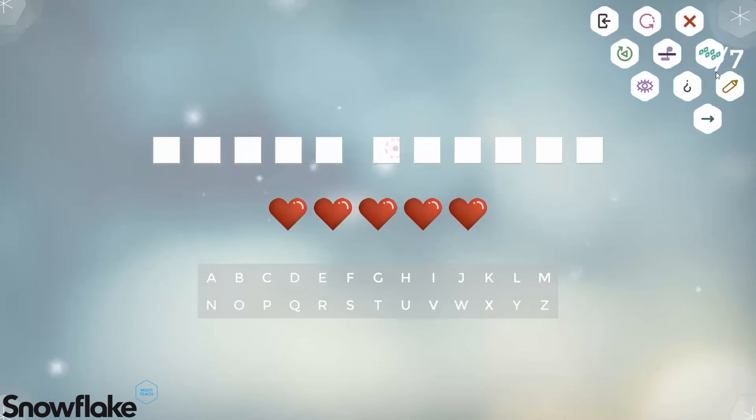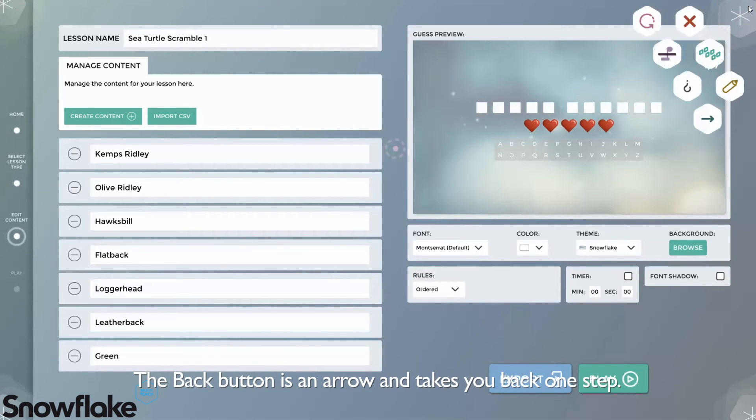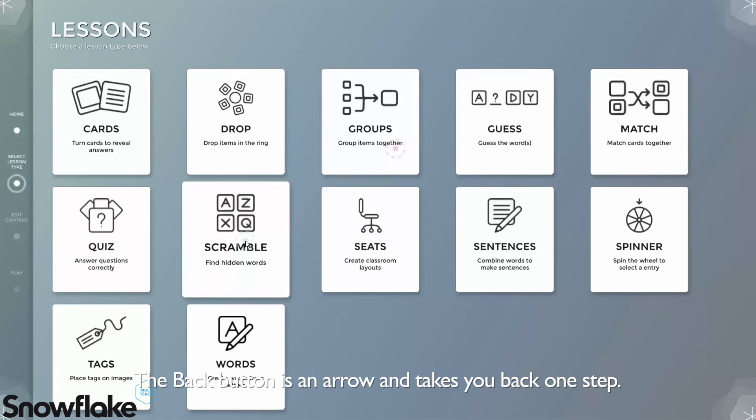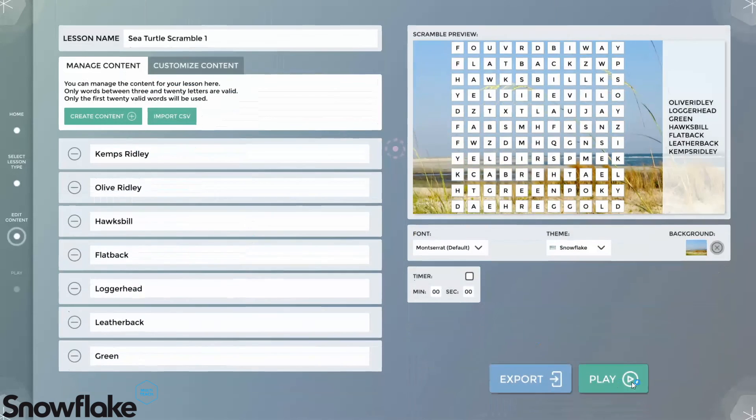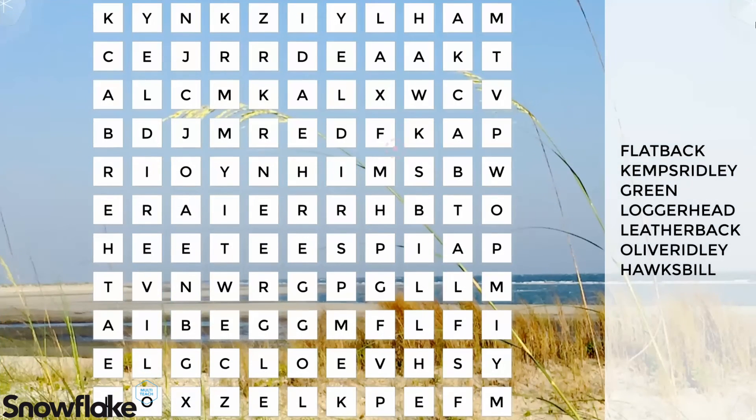The back button is an arrow and it takes you back to the previous step in the lesson creation or presentation process. In this case it takes us back to scramble.